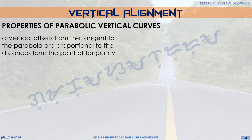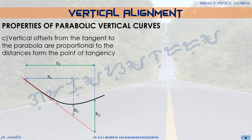The next property: the vertical offsets from the tangent to the parabola are proportional to the square of the distances from the point of tangency. Given this diagram, x1 and h1 will be proportional to h2 and x2. This is used in the offset method for determining the locations of points on the parabola.